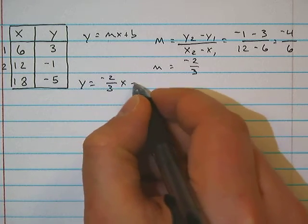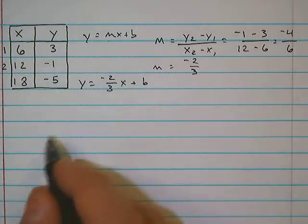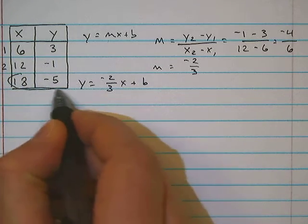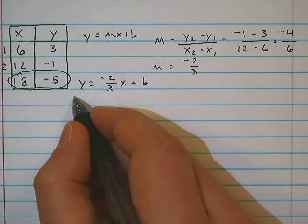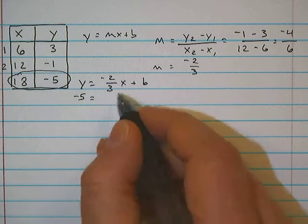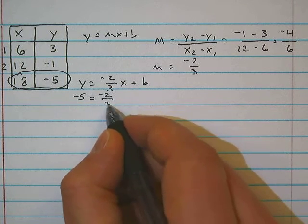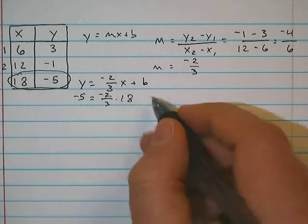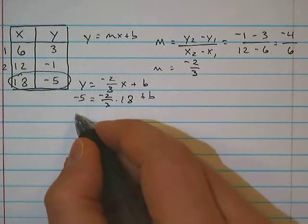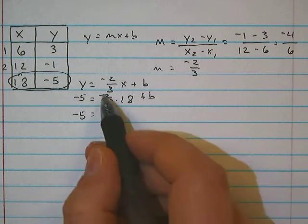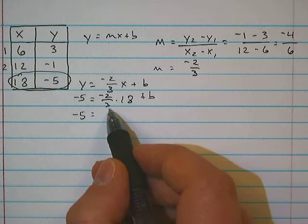So we plug that back in. Y is equal to negative 2 thirds x plus b. We pick another point. I'm just going to use the one that we haven't used yet. So negative 5 goes in for y is equal to negative 2 thirds times 18, which is our x value, plus b.